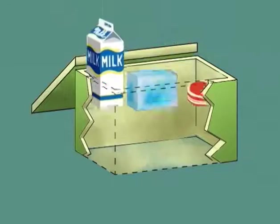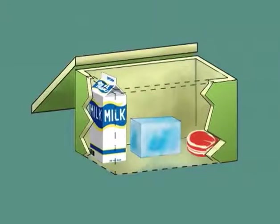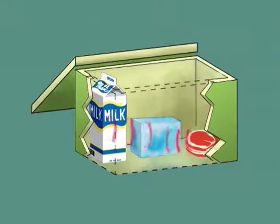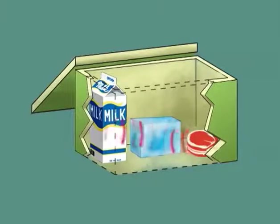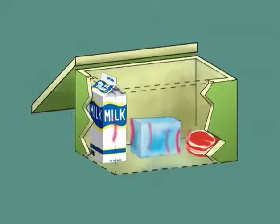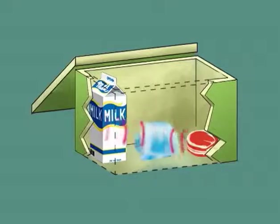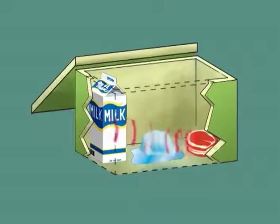When cold ice and warm food are placed in a cooler, the heat energy from the warmer food will flow to the colder ice. The transferring of heat from the food to the ice lowers the temperature of the food because there is now less energy in the food. The ice gains heat energy and will begin to melt. The transfer of heat is massive when a change of state such as melting ice occurs.